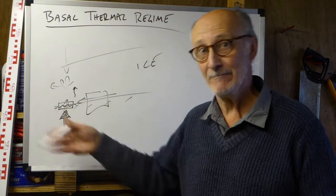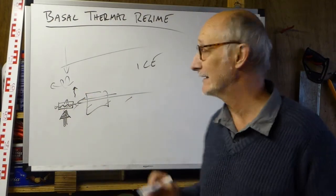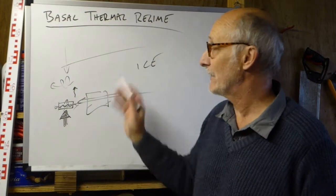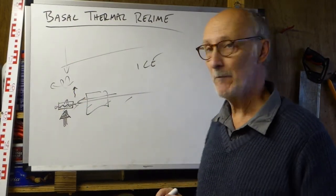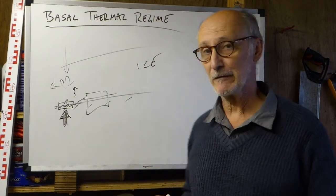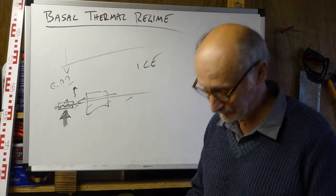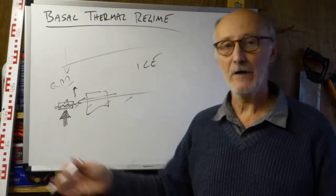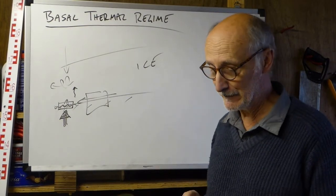We can have more heat being supplied than is being removed, and you'd expect melting. Or you can have heat being removed very efficiently, and the heat supply from underneath not being able to keep up, in which case you'd have a cold basal environment. So we typically talk about environments of basal melting, environments of basal freezing, and environments where there's a balance between melting and freezing.